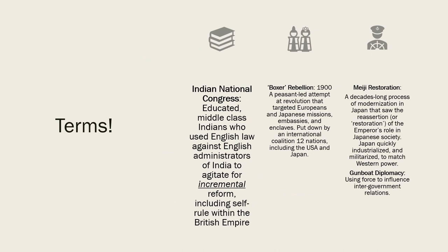Before we dive deeper, let's discuss some new terms. First, the Indian National Congress — educated middle-class Indians who used English law against English administrators to agitate for incremental reform, including self-rule within the British Empire. This initially came from a reformist point of view, with a genuine belief that England had a moral obligation to impart democracy and democratic practices on India, though how democratic that really was, we'll leave to your judgment.